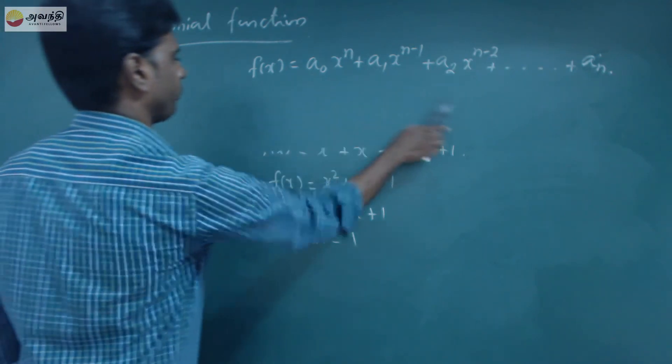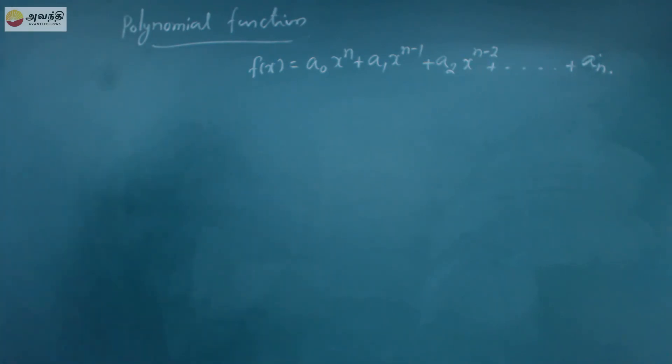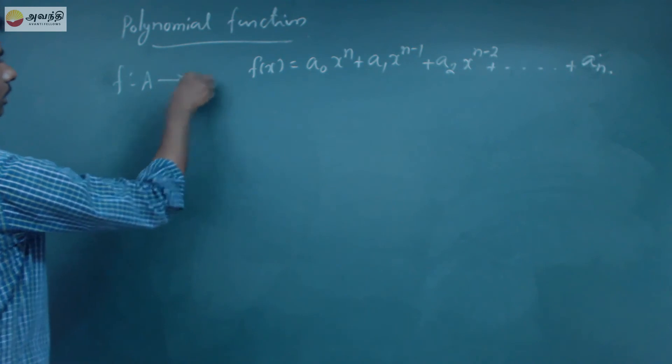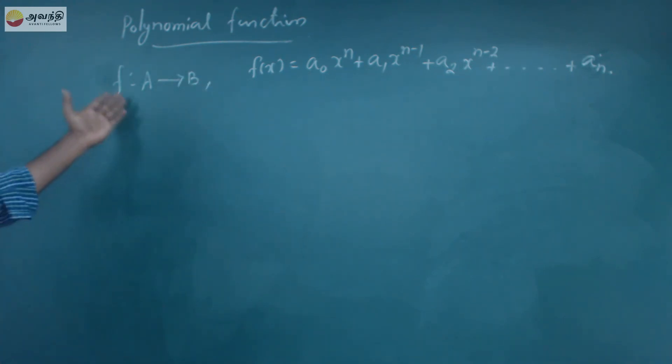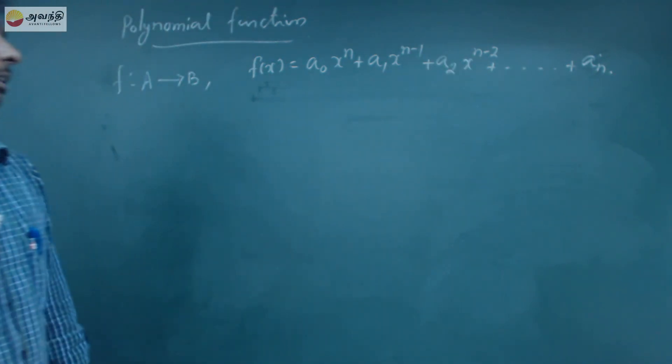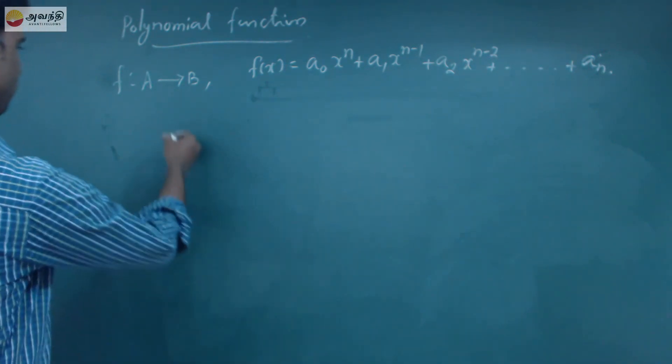So here are the examples. So if we define a polynomial function, we define a function. F from A to B to a function. That is A to B to a function. So we define a function. Where is the function? There is a polynomial function.